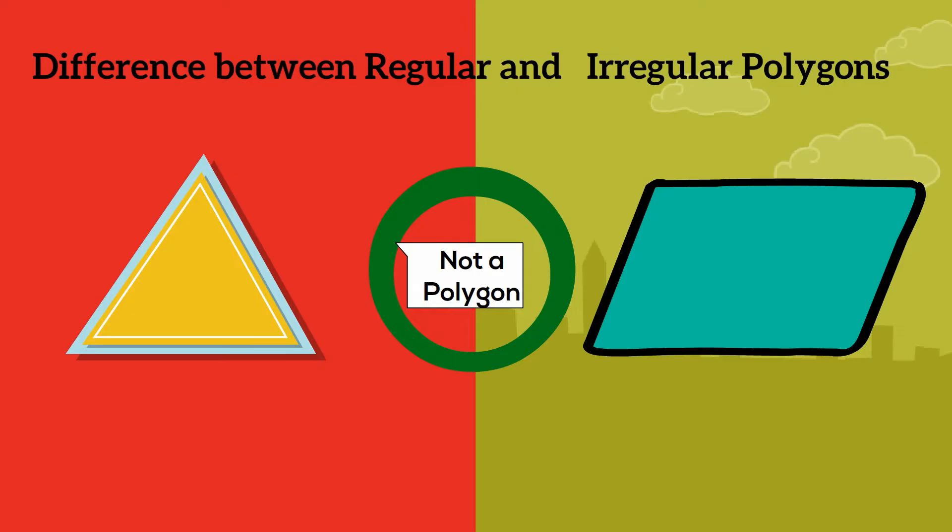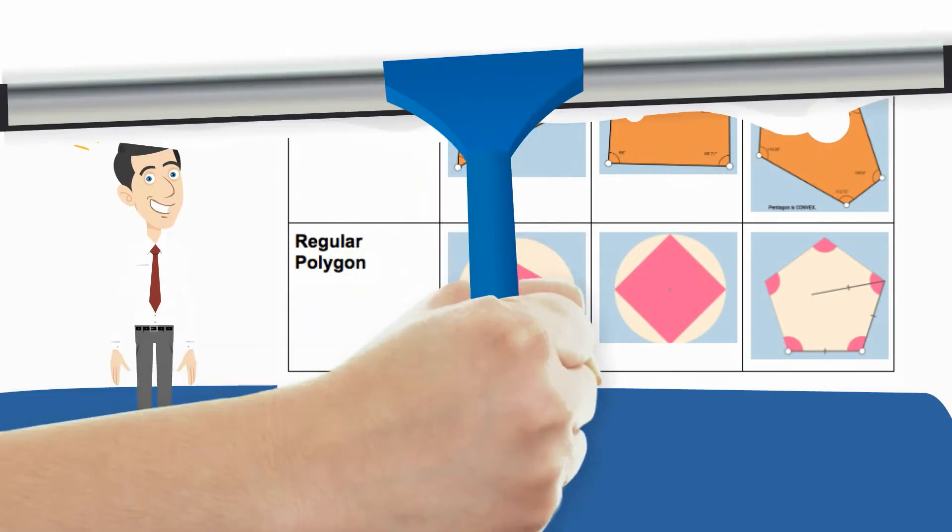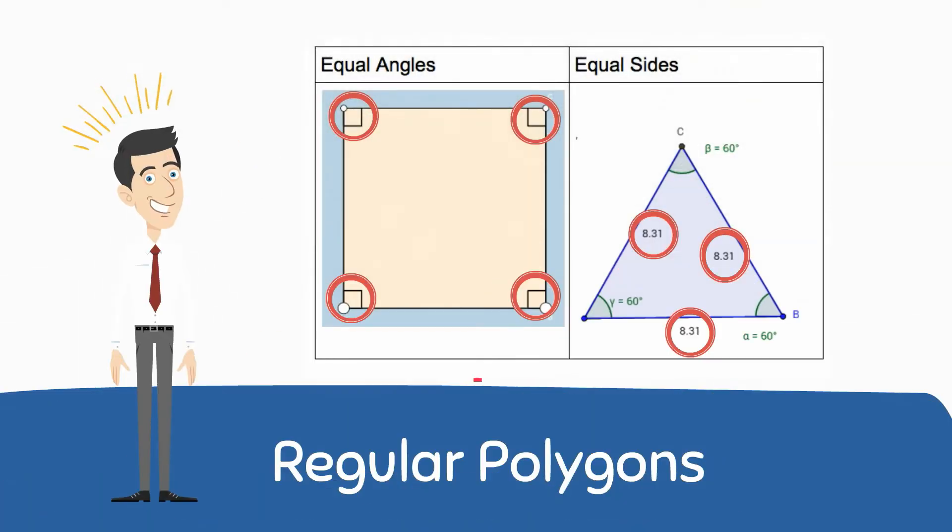As you look at the regular and irregular polygons, you can see that they are all polygons but are slightly different. Regular polygons have equal side lengths and equal angle measures.